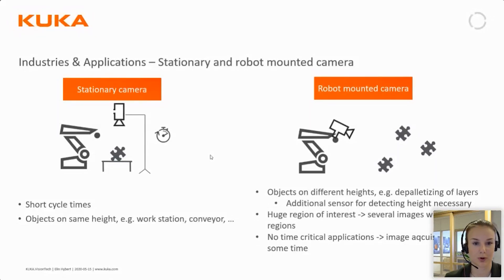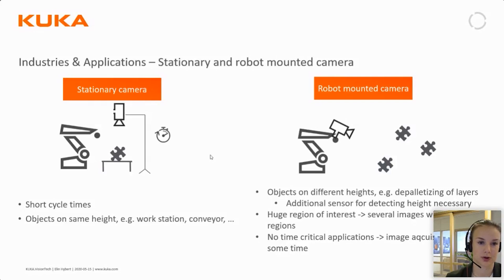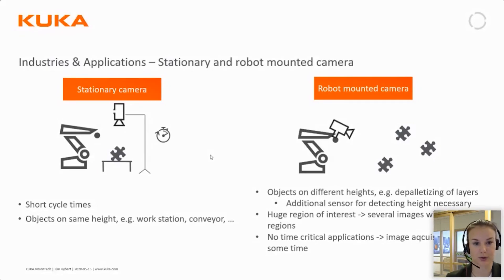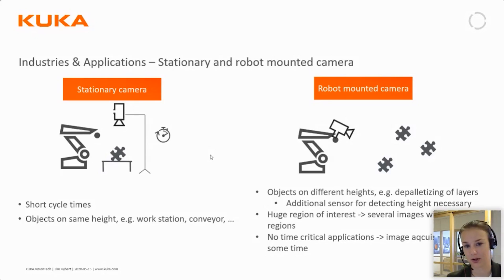The benefit of the stationary setup is that you get a shorter cycle time, because the image processing can take a little bit of time and the robot doesn't have to wait for it to happen, which would be the case if the camera is on the robot flange. This is suitable for objects on the same height, for example a workstation or a still-standing conveyor. We will come to how you can solve it with a moving conveyor later.